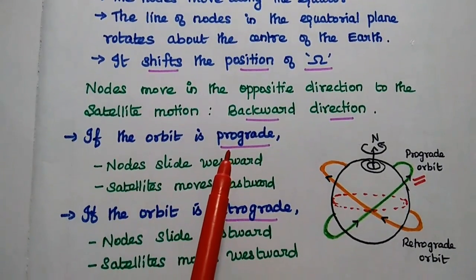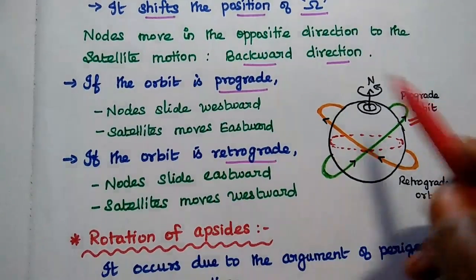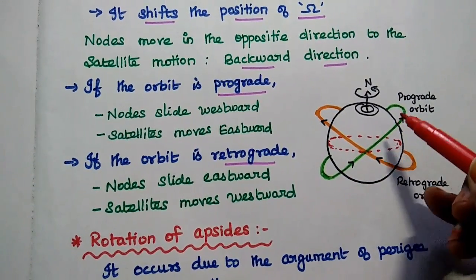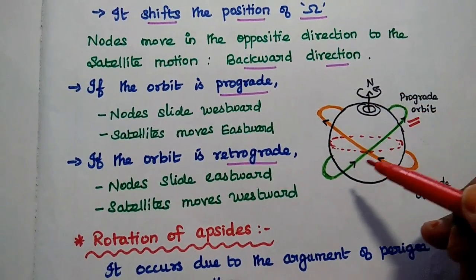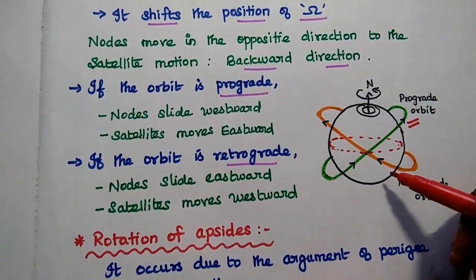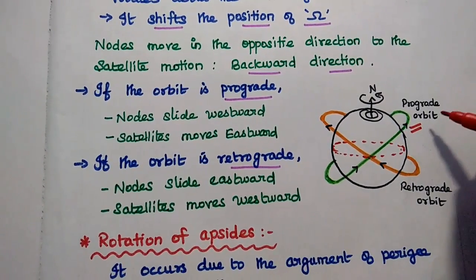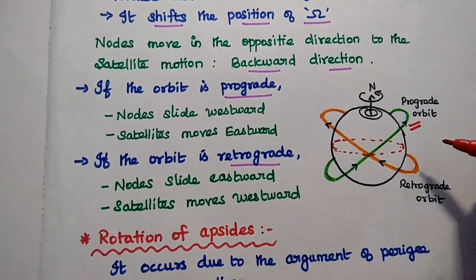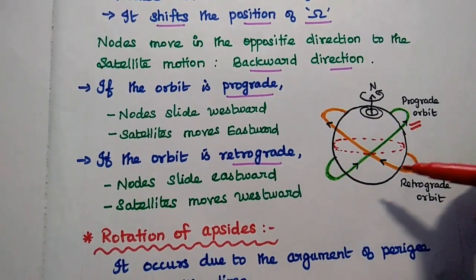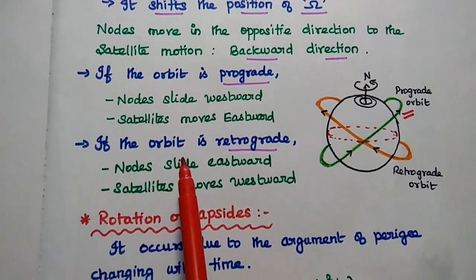There are two kinds of orbits in satellite communication. One is prograde orbit — an orbit in which the satellite moves in the same direction as the Earth's rotation. If the satellite is moving in the opposite direction with respect to Earth's rotation, that is known as retrograde orbit. If the orbit is prograde, the nodes slide westward while the satellite moves eastward. If the orbit is retrograde, the nodes slide eastward and the satellite moves westward — simply opposite directions. These are the rotational variations.